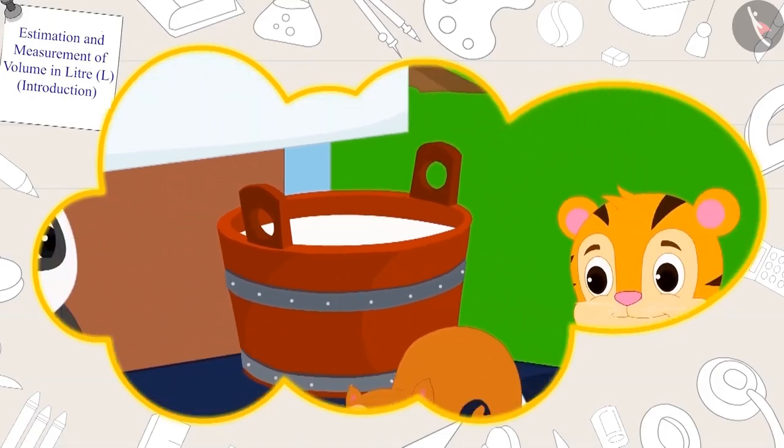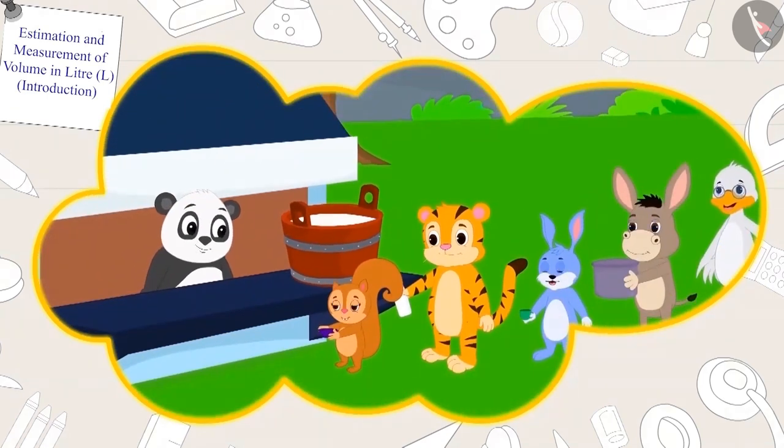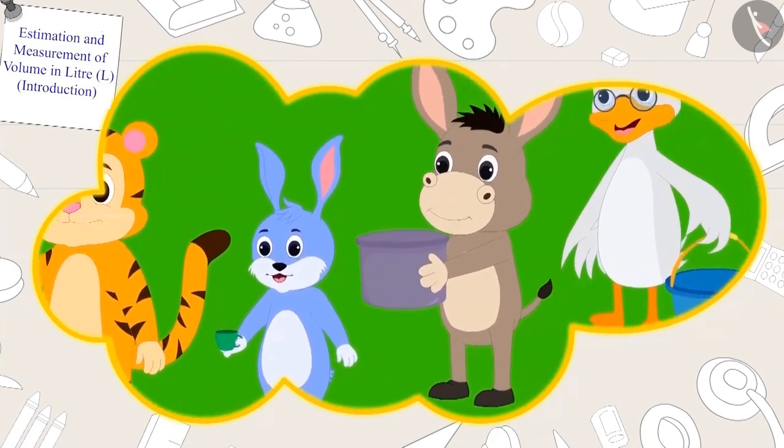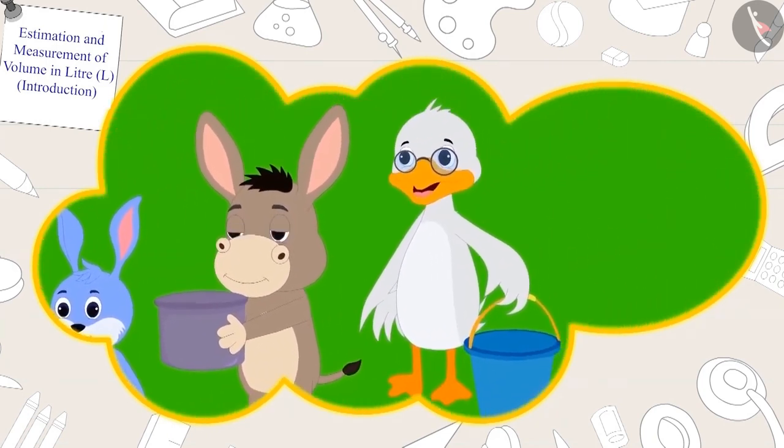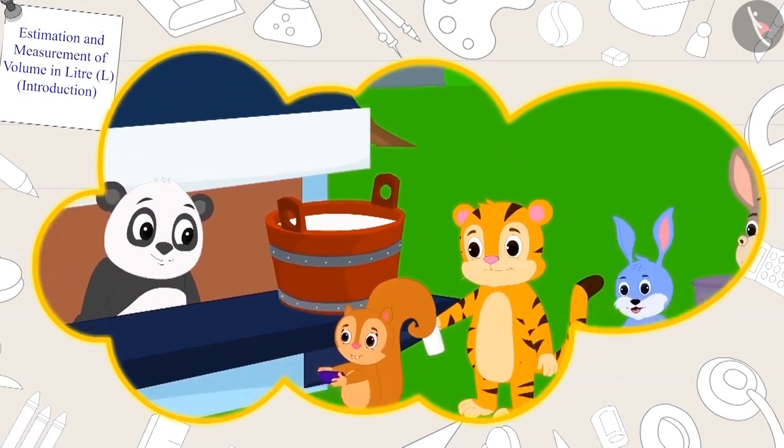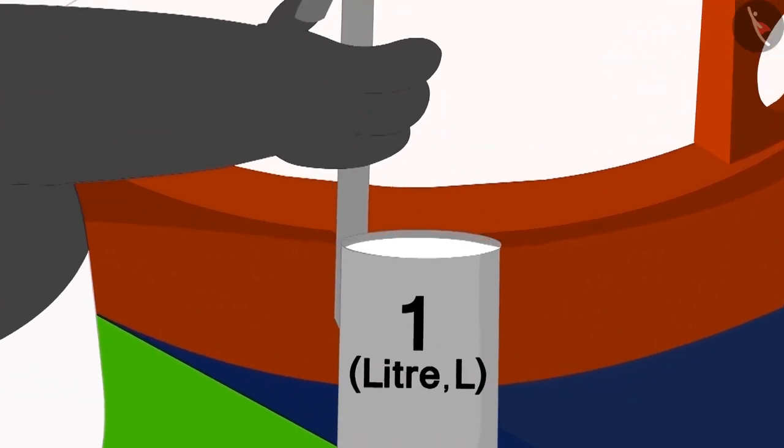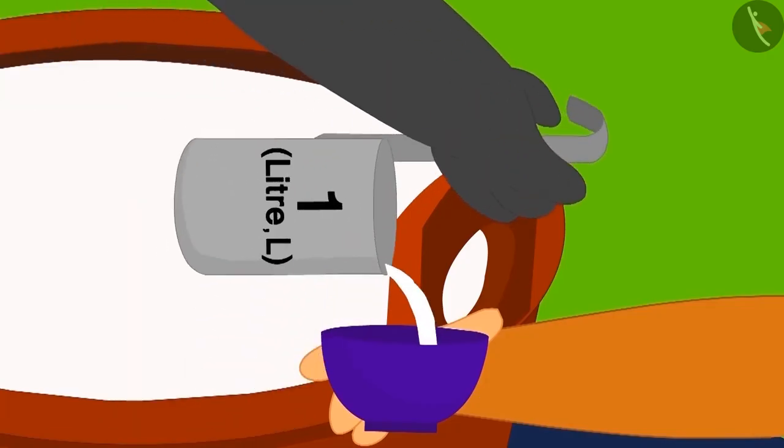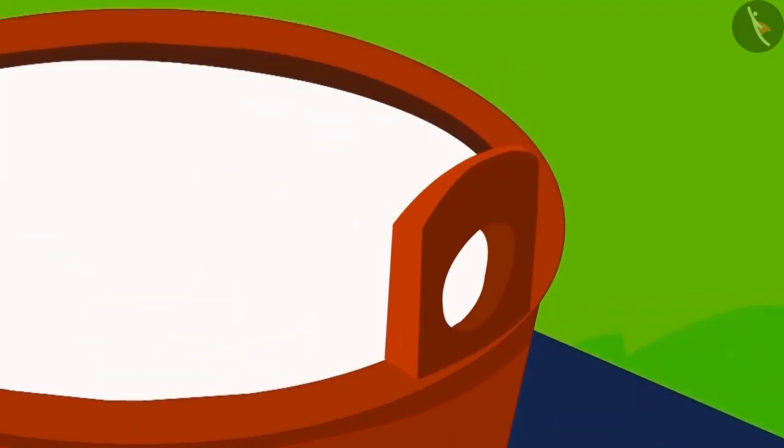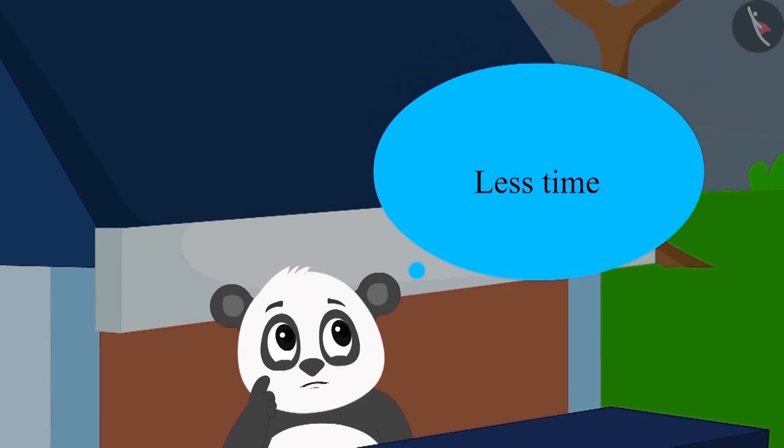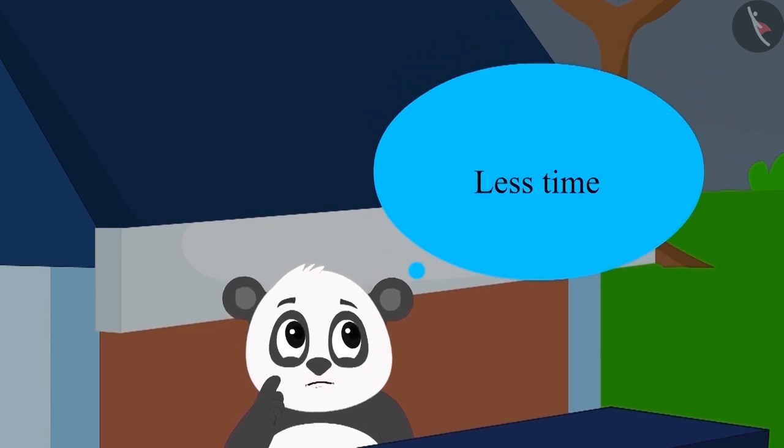The pure milk of Golu's dairy has become so popular that every day there is a long queue at the dairy. It takes a lot of time to measure the milk for every customer using the one liter measure. Golu is wondering how he can sell milk to his customers in the shortest time possible.